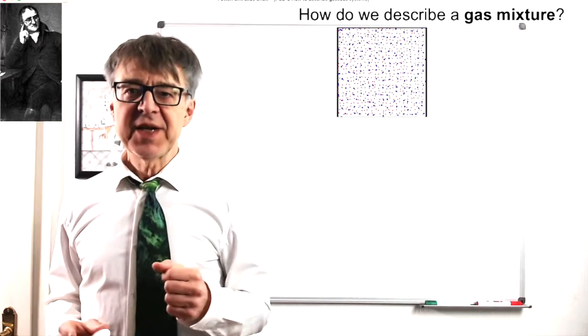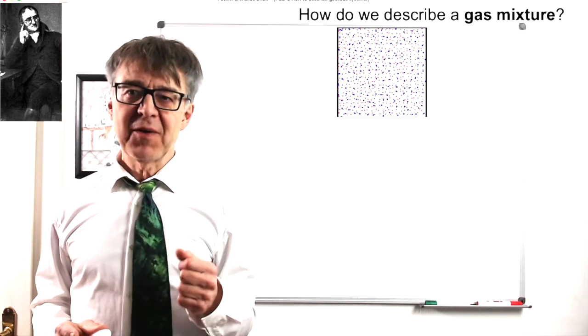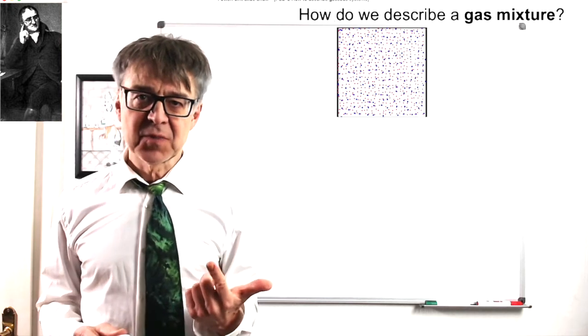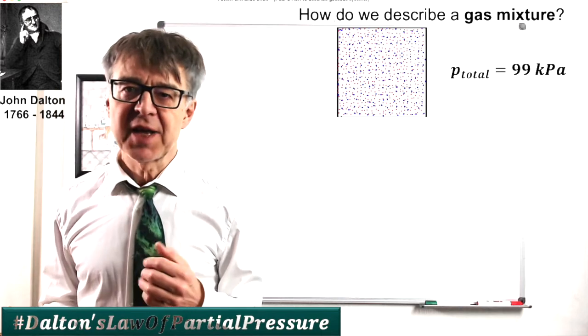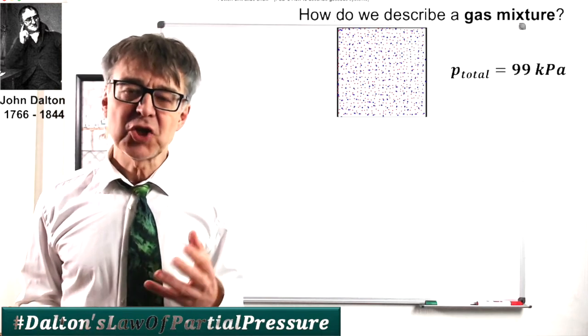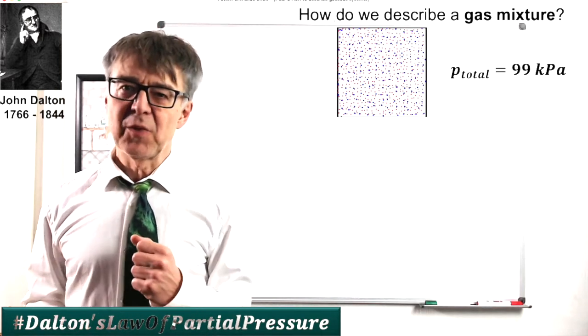Air is a well-known gas mixture of primarily nitrogen and oxygen, symbolized here by red and blue dots. Such a gas mixture can be characterized by the total pressure, 99 kilopascals.